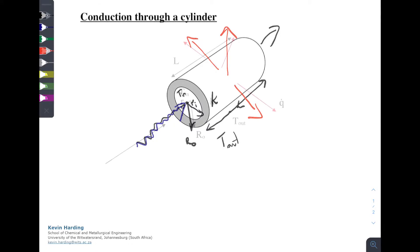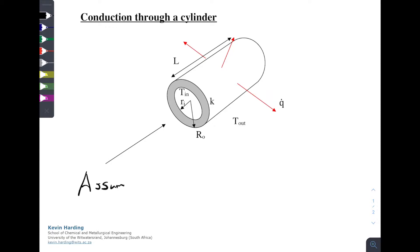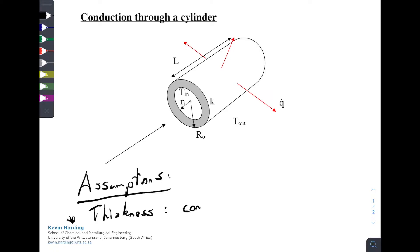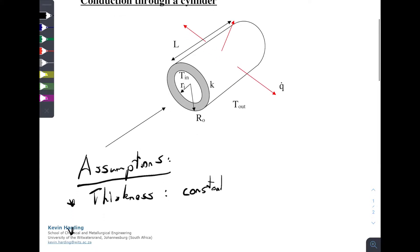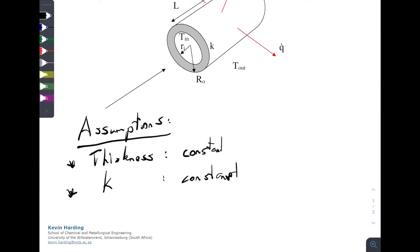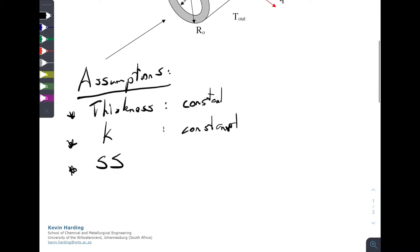Before we start, we're going to list some quick assumptions. The first one is that the cylinder thickness is going to be constant — that's the thickness of the pipe — referring to the gray area in the diagram being the same all the way around the pipe as well as through the length of the pipe. The next assumption is that the thermal conductivity k is also going to be constant. The third assumption is steady state: we've reached a situation where the heat loss through the system does not change over time.